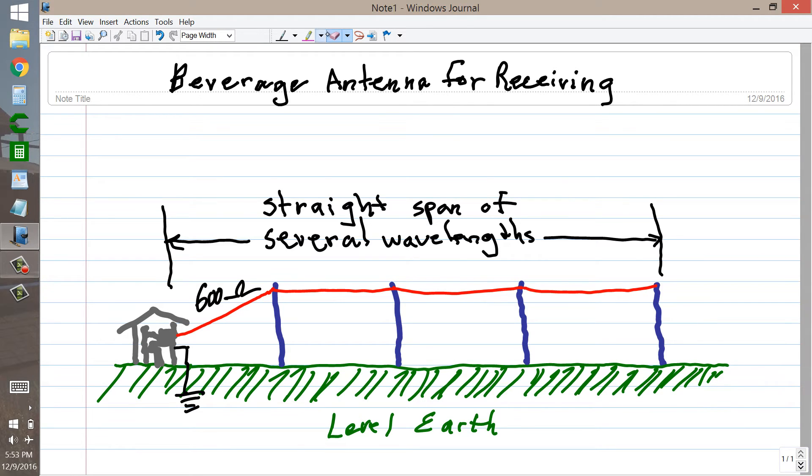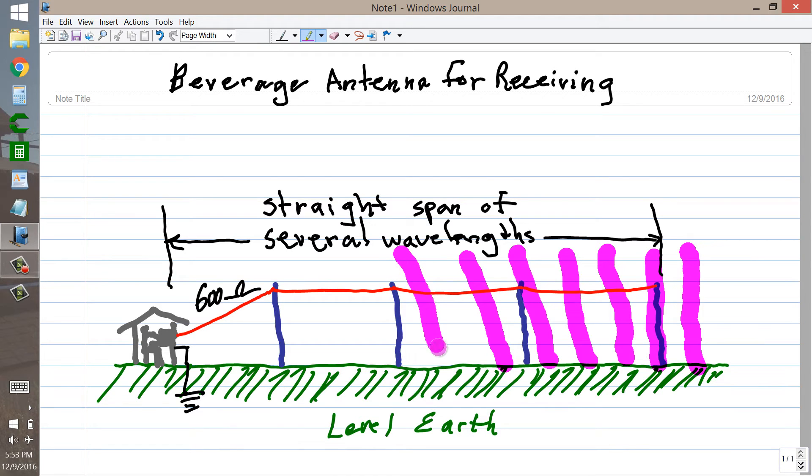It gets rid of the other direction because signals traveling along the wire in this direction will be dissipated to ground through the resistor. And that's exactly what they do, and they sometimes call this a traveling wave antenna for that very reason, because the wave kind of travels along the antenna. The wave fronts, as they arrive, preferably vertically polarized, move faster along the wire than they do along the earth.